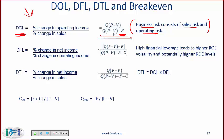With high fixed costs, the denominator becomes low. If the operating leverage is high, then a small percentage change in sales — say a 1% change in sales — will cause a relatively large percentage change in operating income.